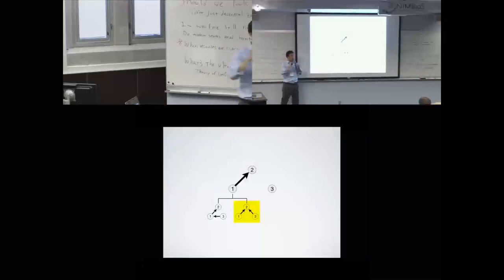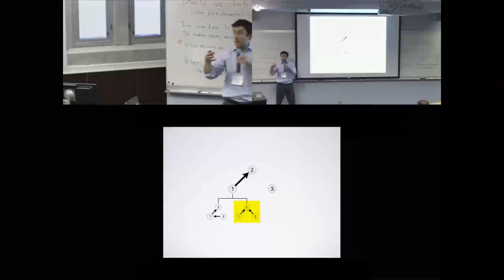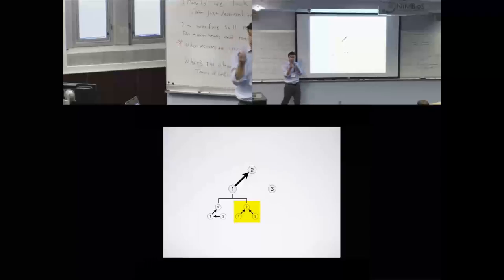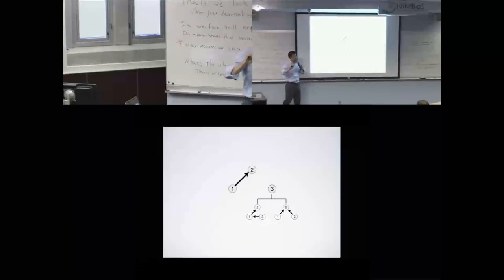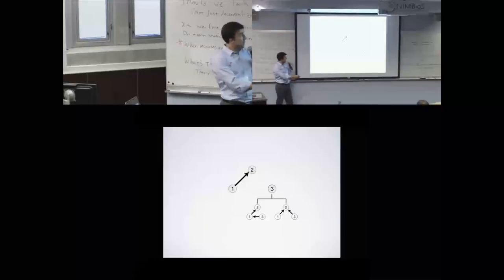For one to attack when three is an ally but not when three is two's ally, that would be the claim. And then just really quickly, the same calculation can be done from three's perspective. Three can have the same possibility space.